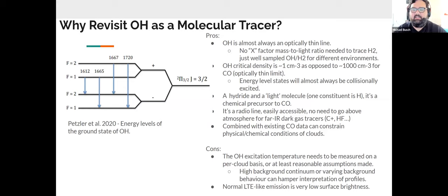Another reason OH is a good molecule for dark molecular gas tracing is that it's a light molecule, one constituent is hydrogen, and it's a precursor to CO formation. As you go deeper into a PDR, your oxygen reservoir transfers from OH to CO. There's an evolution of the OH to H2 ratio with depth into a cloud. I like it because it's a radio line at 18 centimeters, so it's easily accessible, no need to go above the atmosphere for far infrared dark gas tracers like C+ or HF. Combined with existing CO data, OH can help constrain physical or chemical models of clouds.